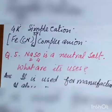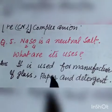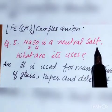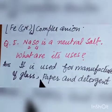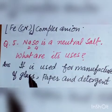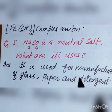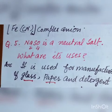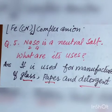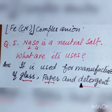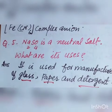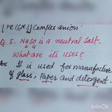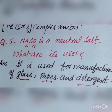Question number five: sodium sulfate is a neutral salt — what are its uses? Sodium sulfate is a neutral salt used for the manufacturing of glass, paper, and detergent. It is also used in the process of making various chemicals.